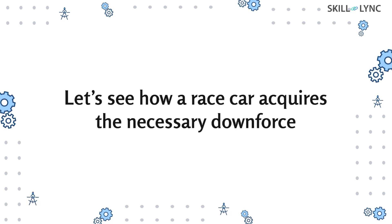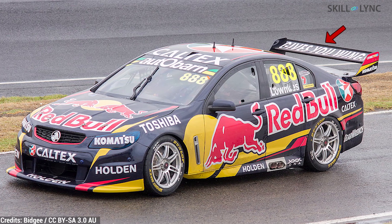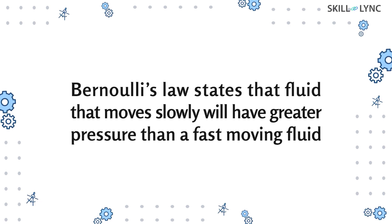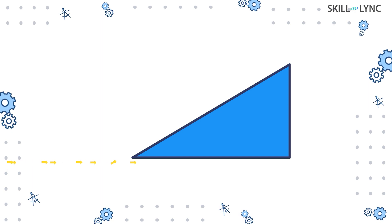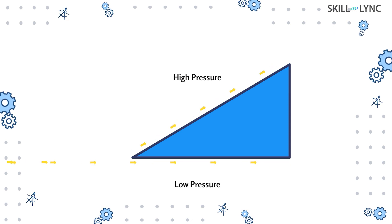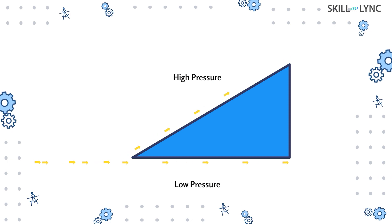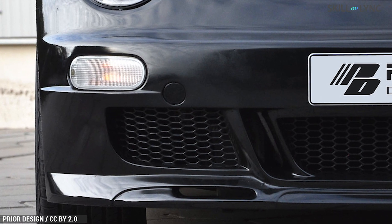Let's see how a race car acquires the necessary downforce. You might have noticed these objects on race cars — they are called wings. According to Bernoulli's law, fluid that moves slowly will have greater pressure than a fast-moving fluid. The wings are designed with a higher surface area at the top compared to the bottom. As the air flows over it, higher pressure is developed at the top surface, whereas at the bottom there will be lesser pressure — this creates the necessary downforce. In addition to wings, splitters can also be used to improve downforce.